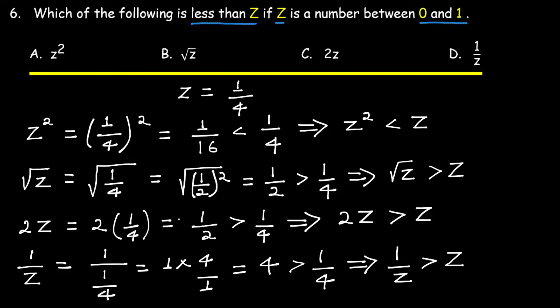So we have that 1/z is greater than z, 2z is greater than z, square root of z is greater than z, and z square is less than z when z is between 0 and 1. So the answer is z square.